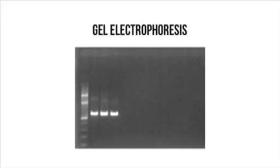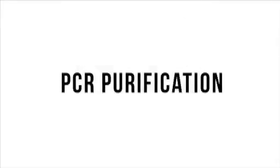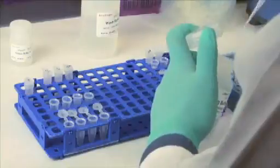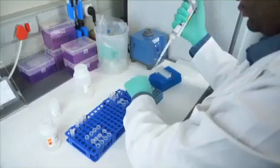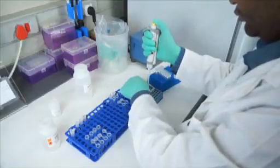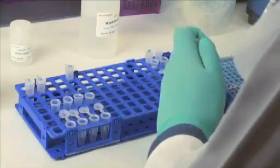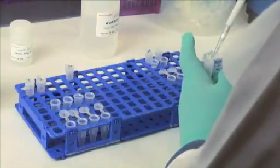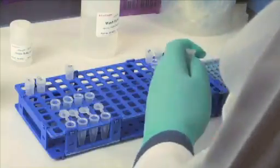There should be no amplification in the negative and reagent controls. In preparation for the sequencing reaction, the positive second round PCR products are cleaned up using the PureLink PCR purification kit. Add 80 microliters of binding buffer to 20 microliters of PCR product and pipette mix. Add the sample mixed with the binding buffer to a PureLink spin column in a collection tube.